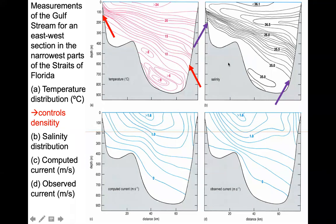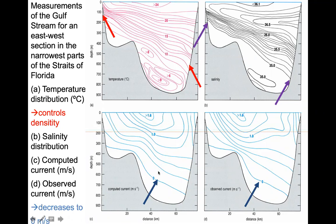Another clue is that our current — both the computed and the observed current — is decreasing with depth all the way down to zero. We have greater current speed at the top of the water column going all the way down to zero near the bottom. These are all indications that we have baroclinic conditions: strong lateral differences in density, with one side denser than the other, and current decreasing with depth.